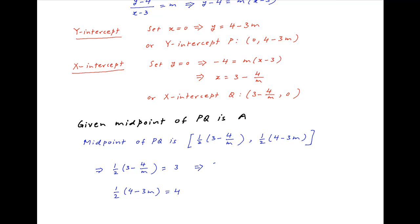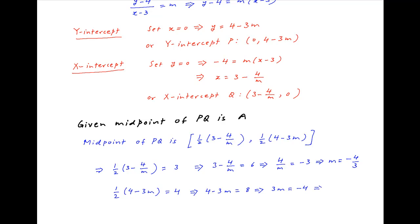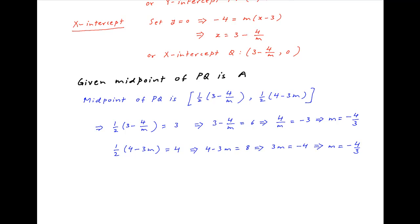The first equation implies that 3 minus 4 upon m is equal to 6, which means that 4 upon m is equal to minus 4 upon 3. The second equation implies that 4 minus 3m is equal to 8, which implies that 3m is equal to minus 4, and therefore again m is equal to minus 4 upon 3.